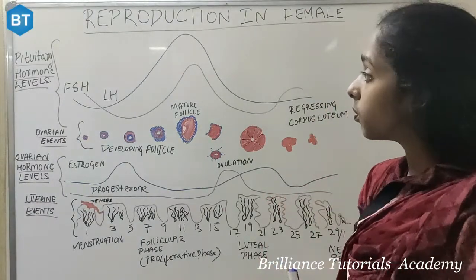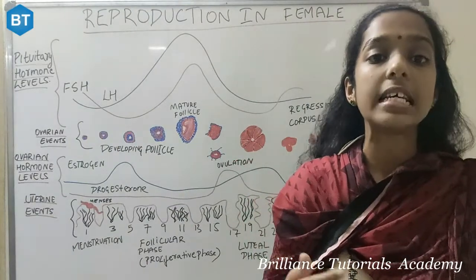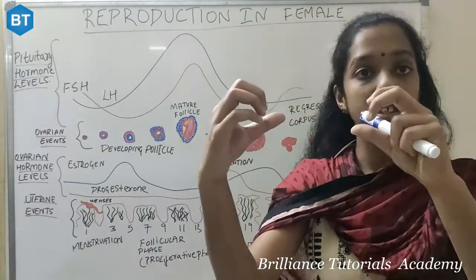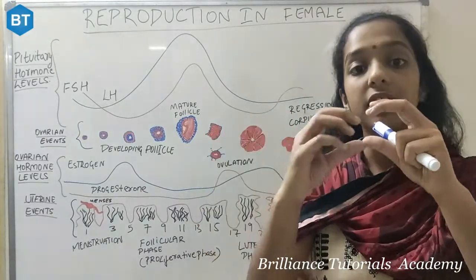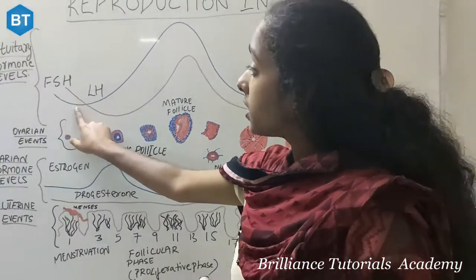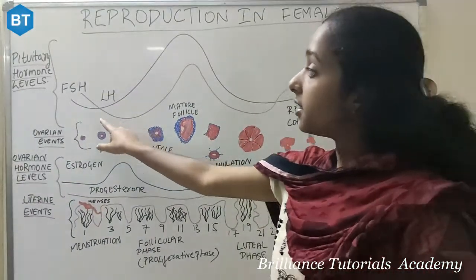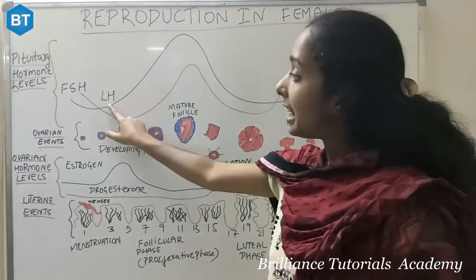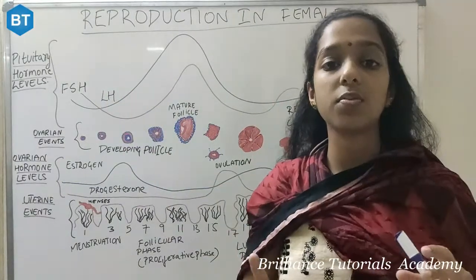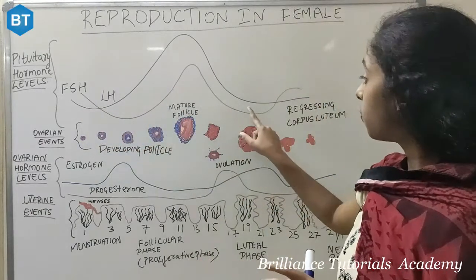First we will learn about the pituitary hormone levels — how pituitary hormone levels regulate the ovarian system. There is an ovarian cyst sitting in the pouch in the two reproductive systems of the female, and that egg releases every month. FSH, the follicle stimulating hormone, releases from the brain, and then there is LH — luteinizing hormone — which regulates the two reproductive systems of the female ovarian system.